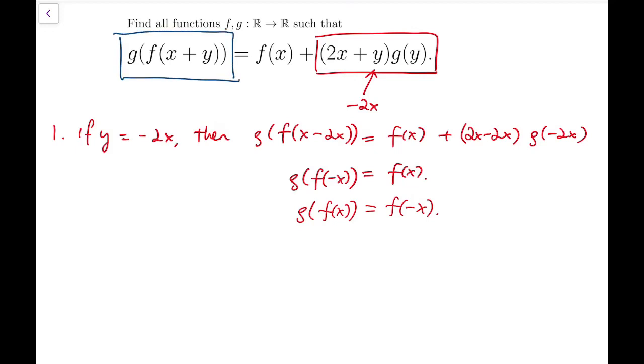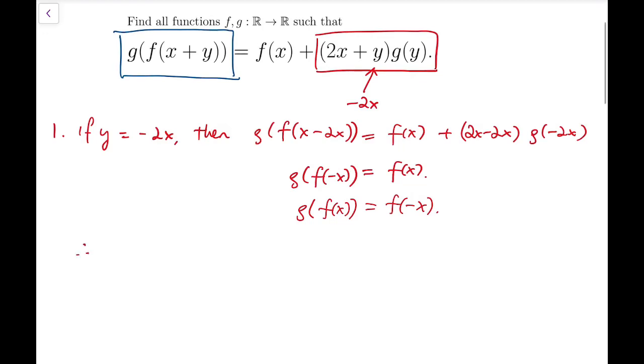I've managed to rewrite this very complicated double function into simply in terms of f. Therefore, I can say that f(-x-y), because that's exactly what g(f(x+y)) will become, equals f(x) + (2x+y)g(y). So that's the first equation.